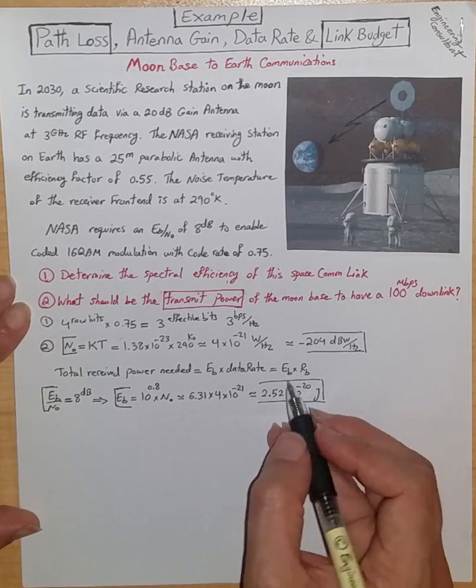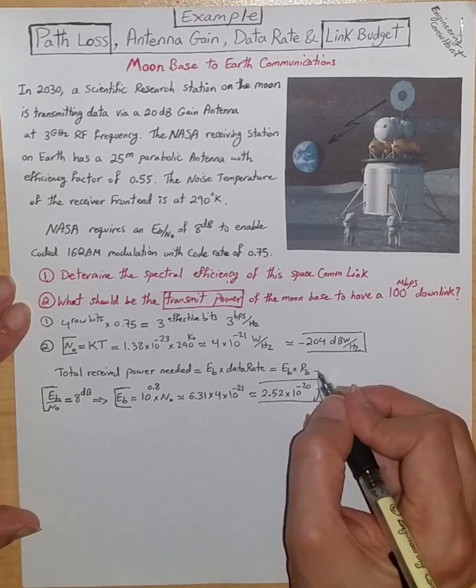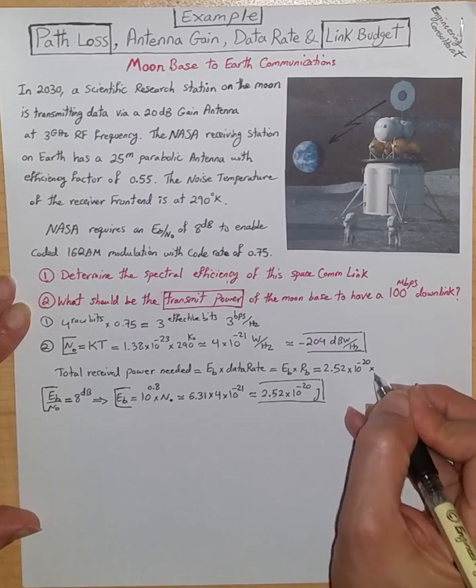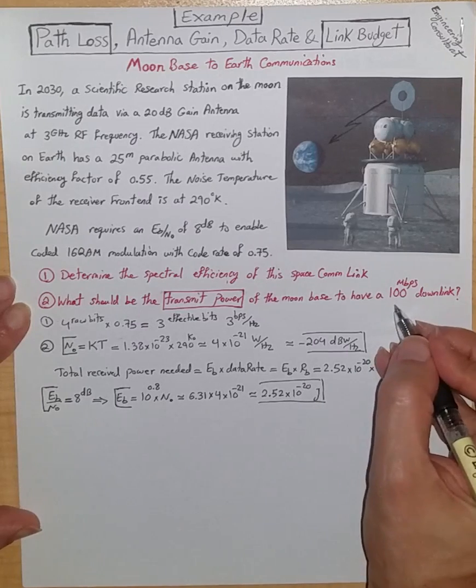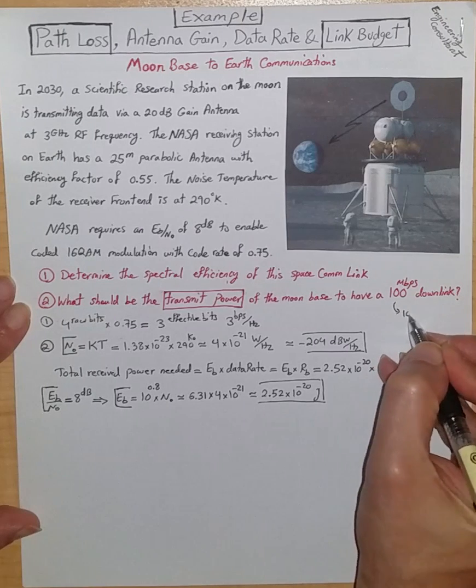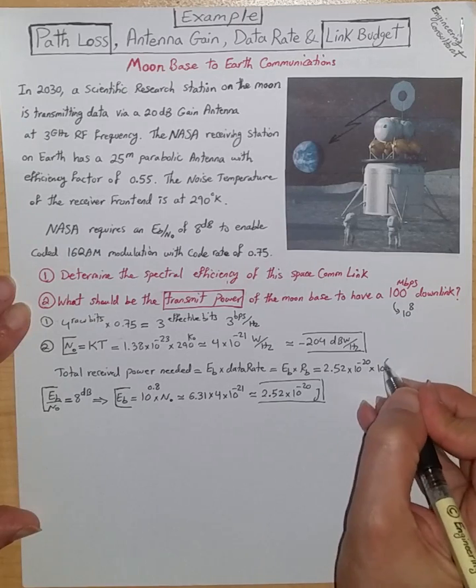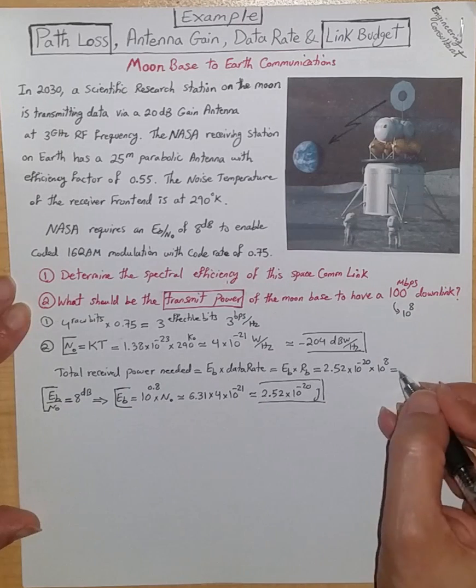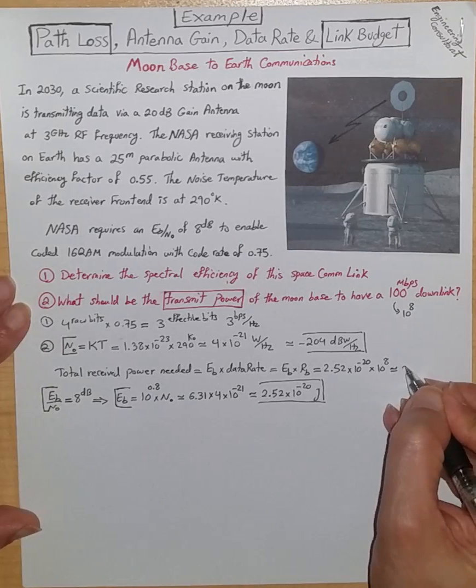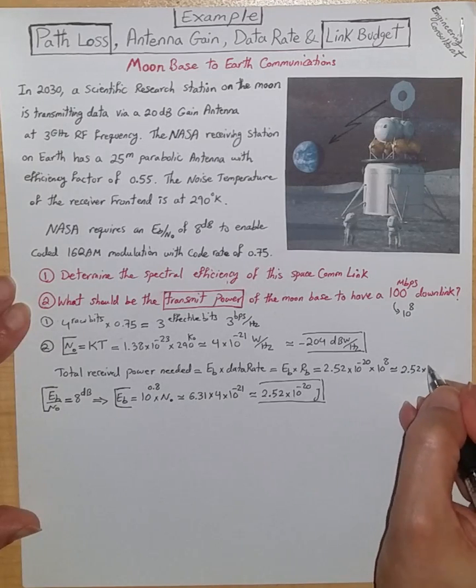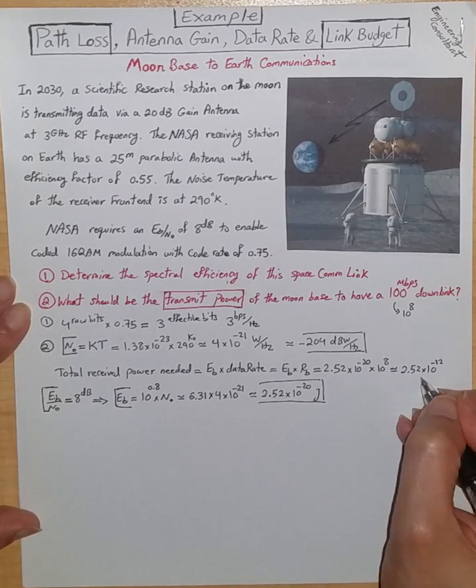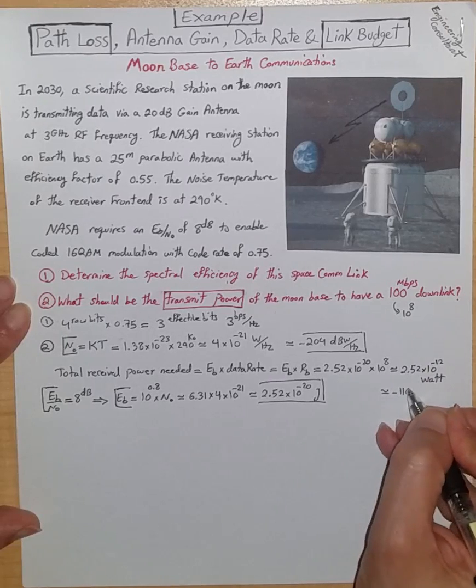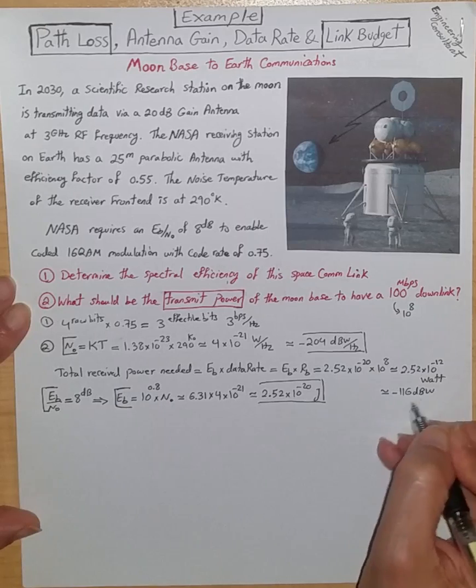Now I can substitute Eb with this. Total received power needed, according to this scheme, is just energy of bit times the desired data rate, which is 100 megabit per second, or effectively Eb times Rb. So I have 2.52 times 10 to the minus 20, and Rb is 100 megabit per second, which is effectively 10 to the 8 bit per second. From here, the total received power needed is roughly 2.52 times 10 to the minus 12 watt, which is roughly minus 116 dB watt in dB term.